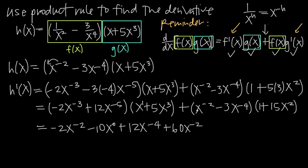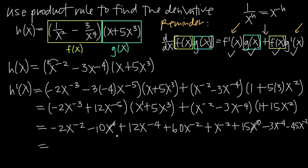For the second product: x to the negative 2 times 1 gives x to the negative 2, and times 15x squared gives 15x to the 0. Then negative 3x to the negative 4 times 1 gives negative 3x to the negative 4, and times 15x squared gives negative 45x to the negative 2. Now combining like terms: the x to the 0 terms — negative 10 plus 15 — give positive 5, since x to the 0 equals 1.